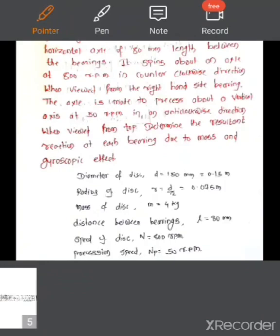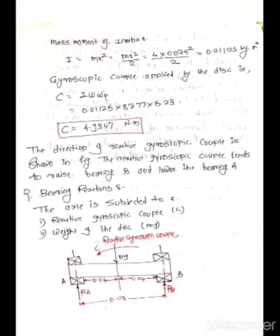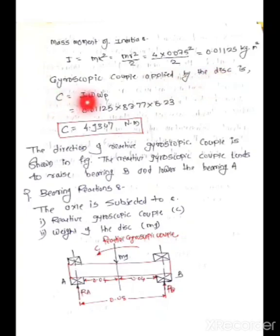Now we calculate the mass moment of inertia. I = MR²/2 because a disc is given and the mass and radius are known. So I = 0.01125 kg·m². Then the gyroscopic couple C = I × ω × ωP. With the known values of I, ω, and ωP, we get C = 4.9347 N·m. This is the magnitude. Now let's discuss the effect of this couple C.